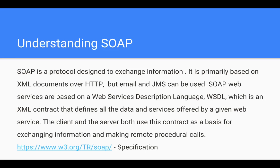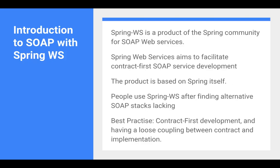The client and the server both use this contract as a basis for exchanging information and making remote procedural calls. Spring Web Services is a product of the Spring Community for SOAP web services. It aims to facilitate contract-first SOAP service development, is based on Spring itself, and follows the best practice of contract-first development with loose coupling between contract and implementation.